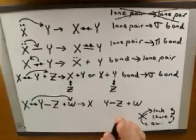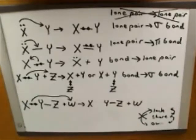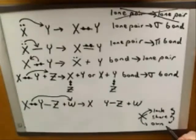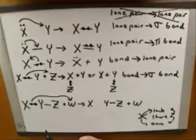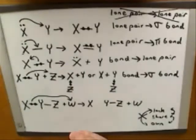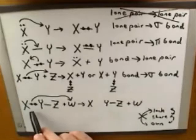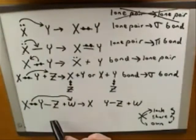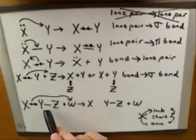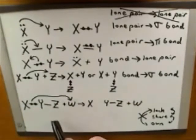That feel-good technique unfortunately doesn't work very well. You're not supposed to make the changes that feel good — you're supposed to make the changes that are dictated by specific electron-pushing arrows. In this case, there was a tail of an arrow coming from the bond between X and Y, but there was no tail of an arrow coming from the bond between Y and Z.